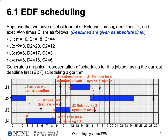Earliest Deadline First, as the name says, prioritizes the job with the earliest deadline — the job most urgently needed to finish first. We start at time zero where only job two is available, so we start job two. At time three, job four becomes available with a deadline of 13, which is earlier than job two's deadline of 28, so job four has higher priority and we switch over to it.